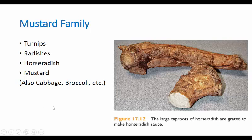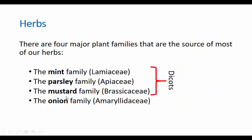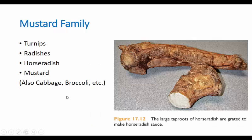Our third family, also a dicot, is the mustard family. That includes turnips, radishes, and horseradish — all kind of tough vegetables with the consistency of a root or a potato. I said herbs are normally a leaf, but these three are not a leaf — they're a root. So the herb rule doesn't apply well to the mustard family.